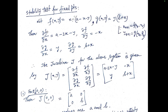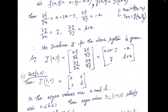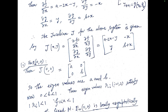For the stability test for these fixed points, let f(x,y) = x[a - x - y] and g(x,y) = y[b + x], where x(t+1) = f(x(t), y(t)) and y(t+1) = g(x(t), y(t)). We find the partial derivatives ∂f/∂x, ∂f/∂y, ∂g/∂x, ∂g/∂y, and then form the 2×2 Jacobian matrix J.